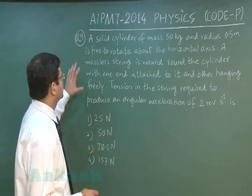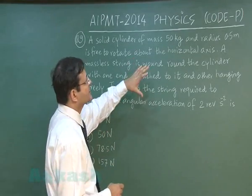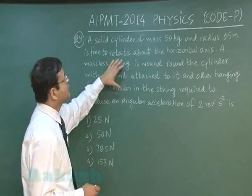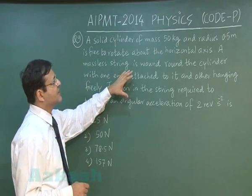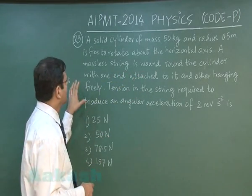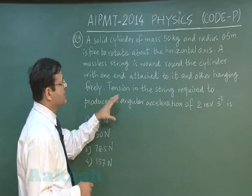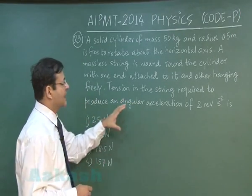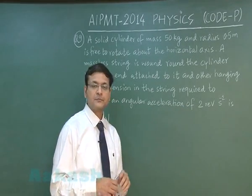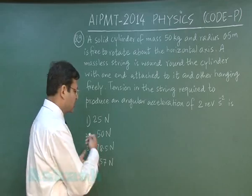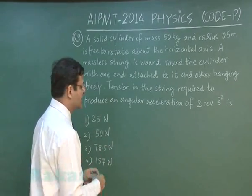In question 9, a solid cylinder of mass 50 kg and radius 0.5 meter is free to rotate about the horizontal axis. A massless string is wound round the cylinder with one end attached to it and the other hanging freely. The tension in the string required to produce an angular acceleration of 2 revolutions per second squared is to be calculated.